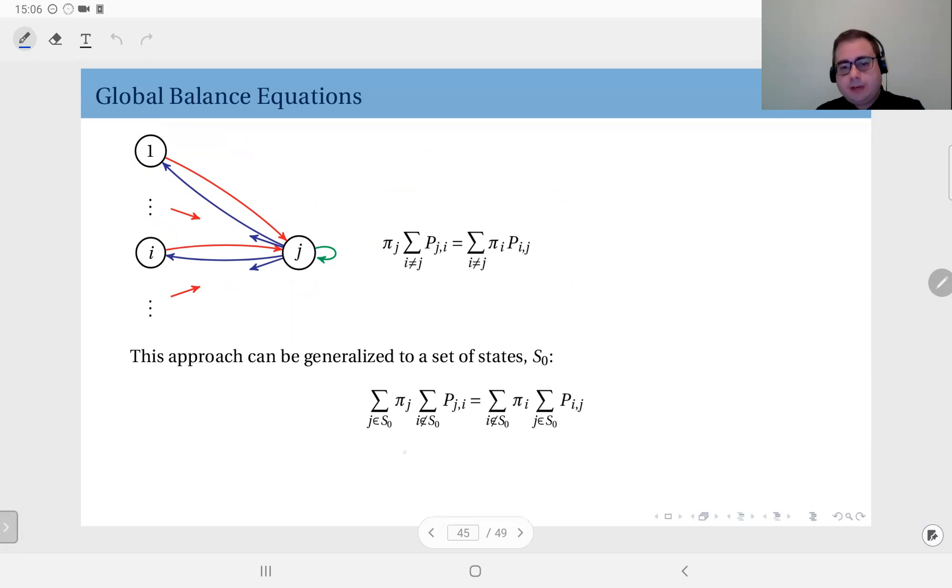Here on the left hand side you have the probability flux out of subset S₀. For all states in S₀, πⱼ times the flux and transition probabilities from state j to outside S₀, not also the ones in S₀, but also the ones outside S₀.